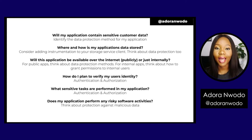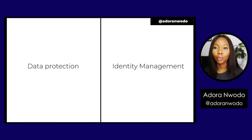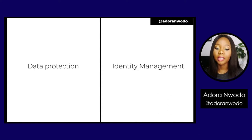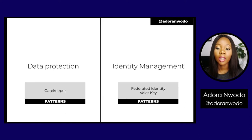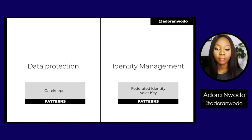These six questions come down into two major umbrellas: data protection and identity management. Based on that, I'm going to talk about three security patterns. The data protection pattern will be the Gatekeeper pattern, and the two identity management patterns will be the Federated Identity pattern and the Valet Key pattern.